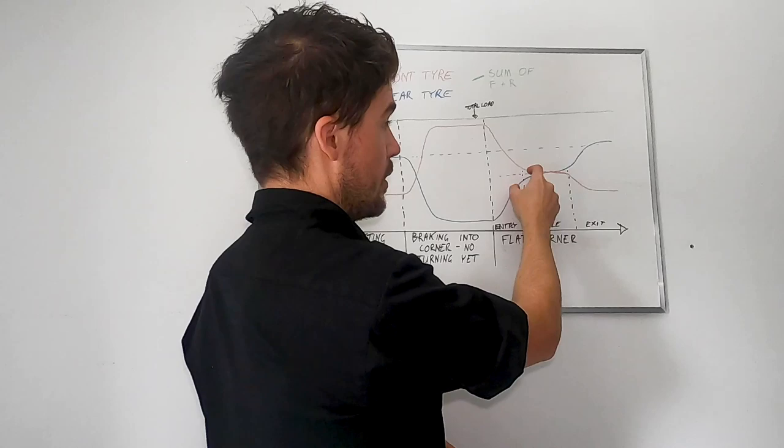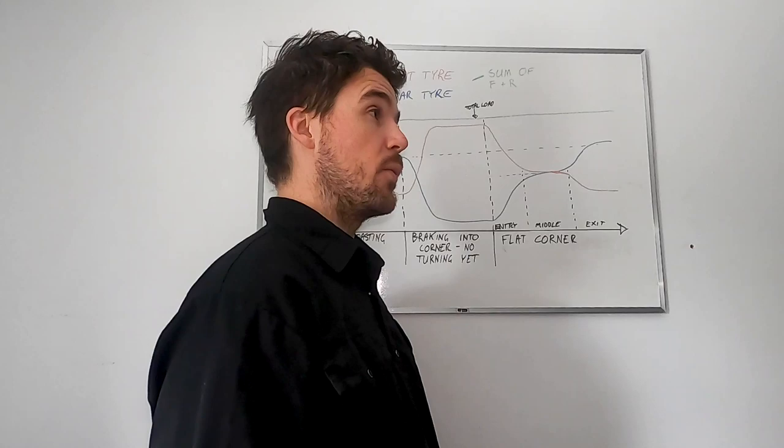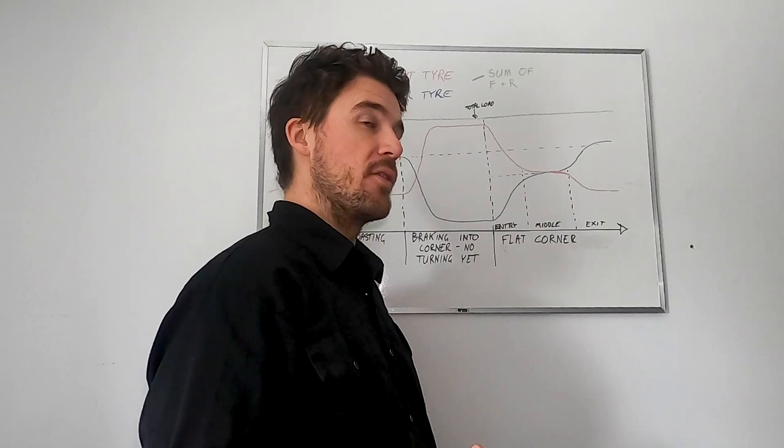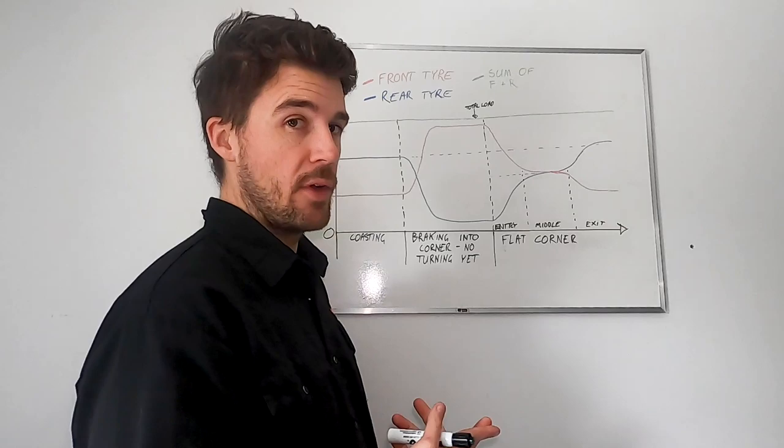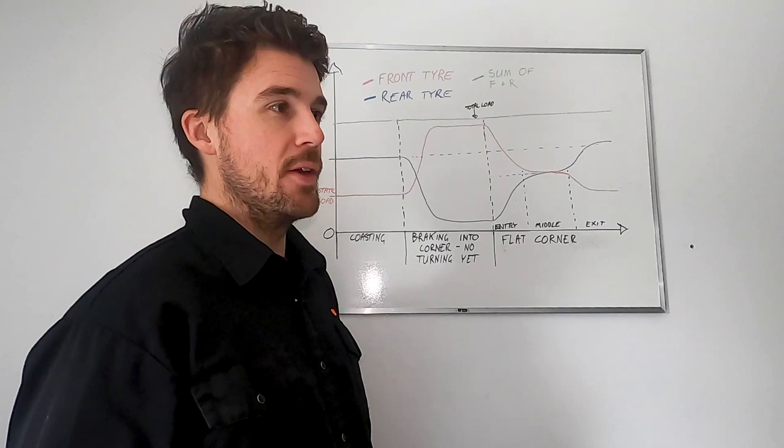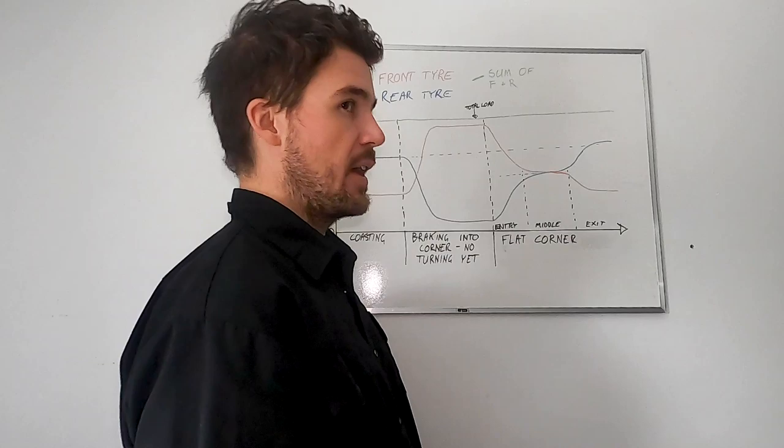As we release the brakes, again, assuming here that this is a flat corner, not a berm, that means that the total load on the tires stays the same. So we're arcing a nice big turn on smooth ground without the ability to create additional vertical force through a berm or similar. So what that means is as we release the brakes towards the entry of the turn, the load starts to transfer more to the rear tire. So the rear tire load is increasing, front tire load is decreasing, but it's still quite a bit higher than the rear as we're releasing the brakes. At some point, we reach this approximately steady state area. So this is the middle of the corner.